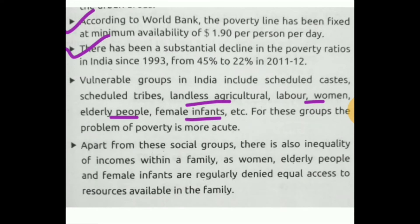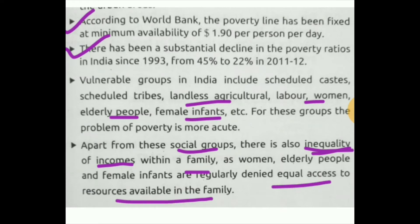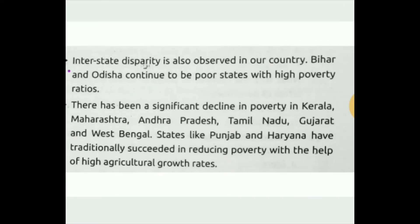Apart from these social groups, there also exists inequality of income in society. Within families, women, elderly people, and female infants are regularly denied equal access to resources. There also exists interstate disparity, meaning the poverty ratio differs from state to state.